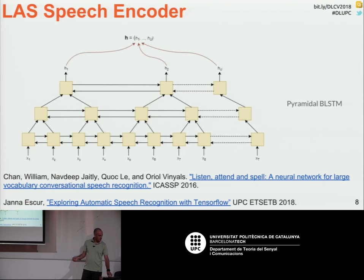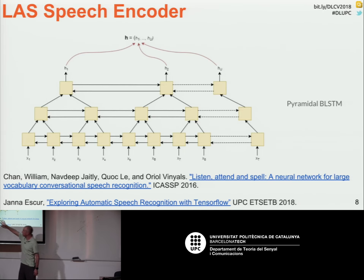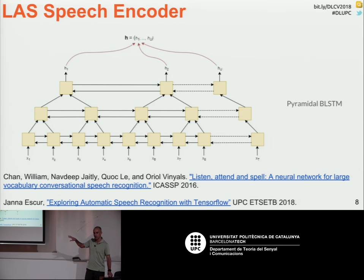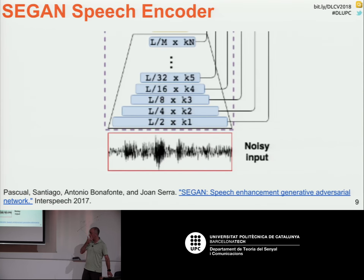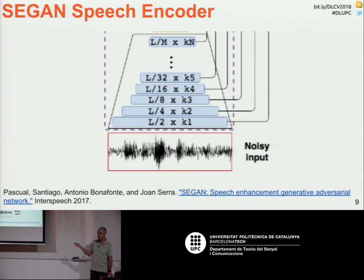One tool we can suggest is the listen-and-spell encoder — a work that Anna spent a whole semester fighting against just to make it work, which tells you how experimental and early-stage we are. Another option here at UPC: Santi Pascual has released a model called SEGAN that does speech enhancement. It takes raw speech input, and if there's noise, it will improve it. It has an encoder and decoder, and it's TensorFlow open source.